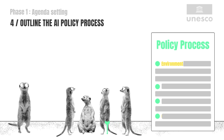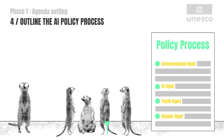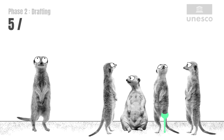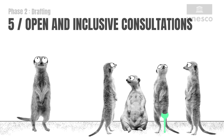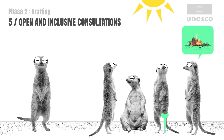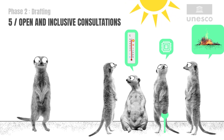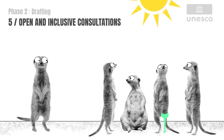Stakeholders should know how their inputs will be heard and incorporated. Phase 2: Drafting. Building block 5: Open and inclusive consultations to develop policy. Involve stakeholders in ideating, drafting, implementing, and reviewing policies.